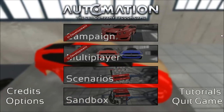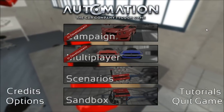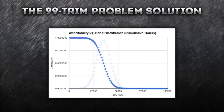Before discussing the intricacies of the solution, I want to present a very nice statistical tool for modeling behaviors and distributions — the Gaussian or Bell Curve. This Bell Curve is handy because it is easy to model and gives a nice smooth distribution. In this example we have a centroid of $35,000 on the buyer budget x-axis and the probability of a buyer having that budget on the y-axis. We have a centroid of $35,000 and a spread of $7,000. Using one minus the integral of this function up to a certain price point gives us the affordability.